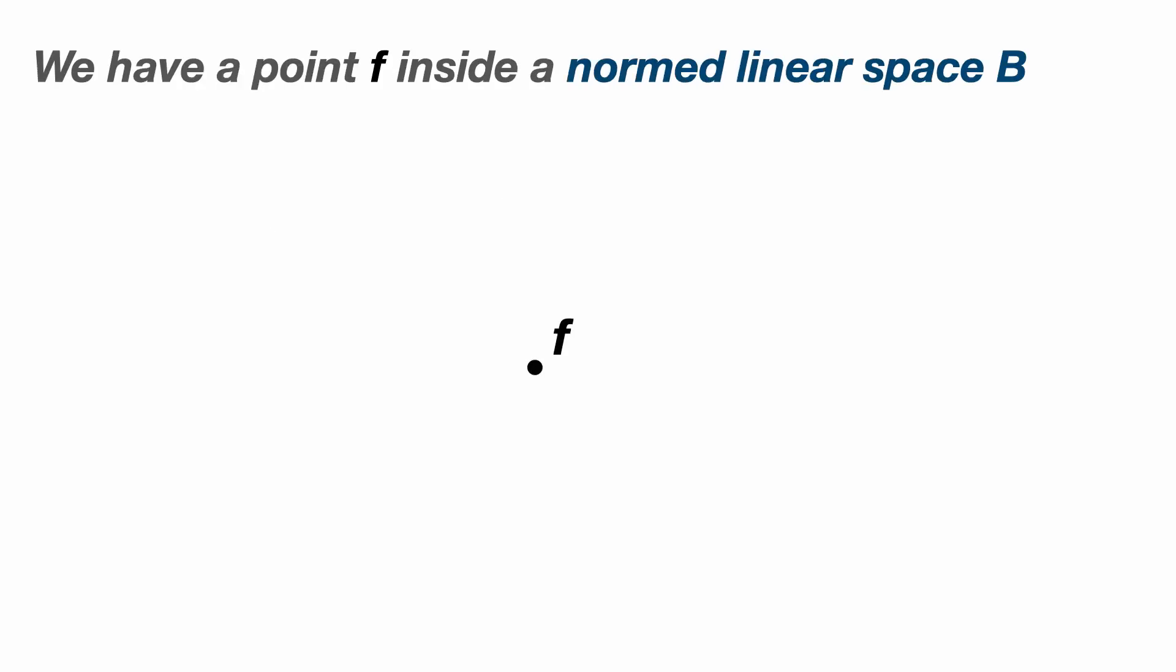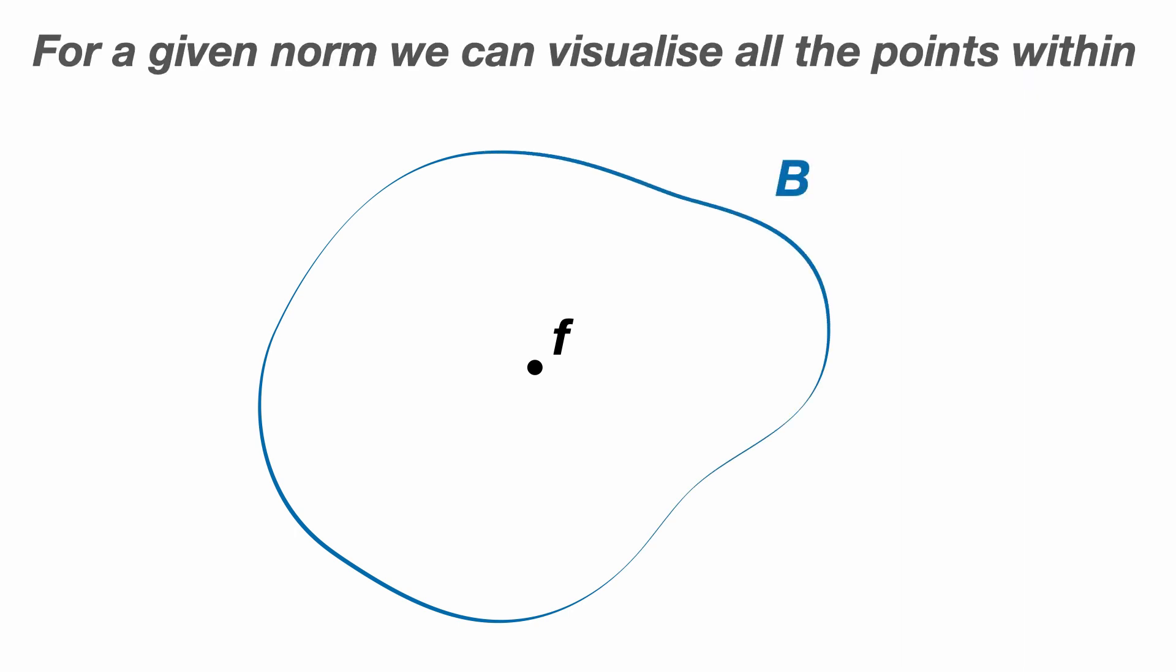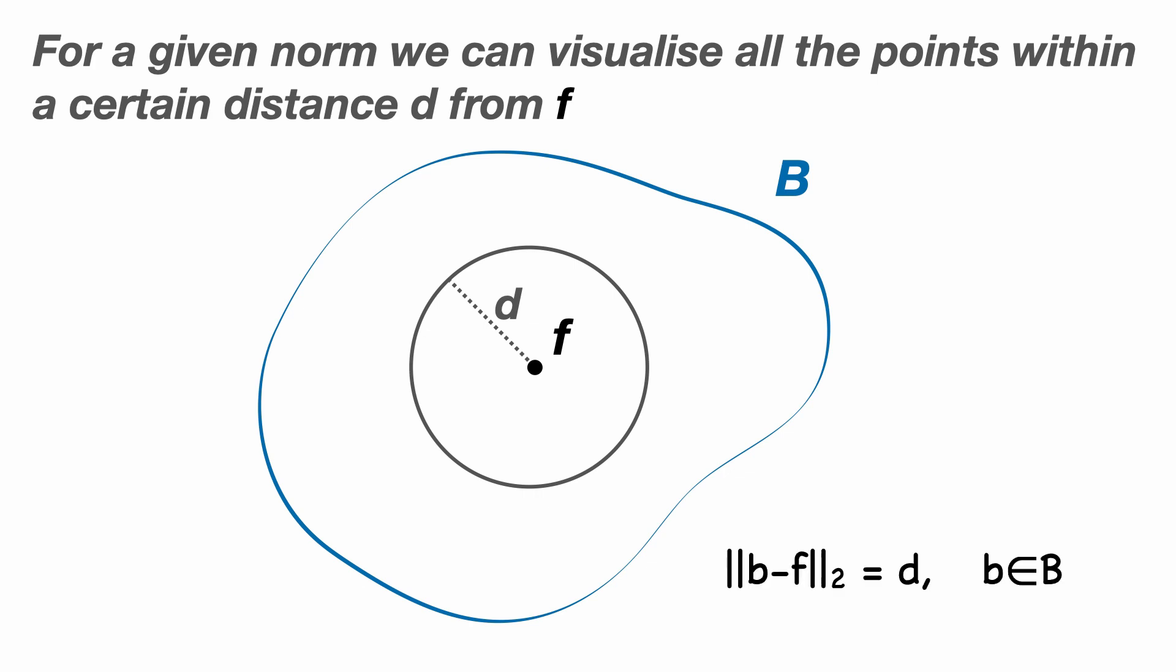We have a point F inside a normed linear space capital B, and for any given norm we can visualize the points within a certain distance D away from F. For the L2 norm that would be any point within this circle of radius D, the circle being made up of all the points B in capital B where the norm of B minus F is equal to D.